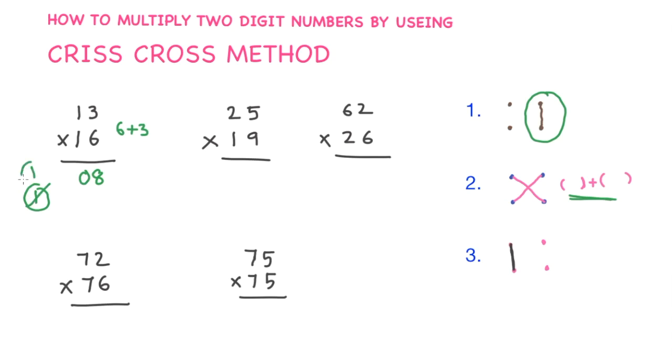Now, step 3. Multiply these two numbers. 1 × 1 is 1. 1 plus 1 is 2. So, 13 × 16 is 208.